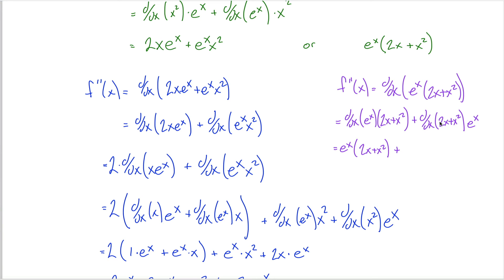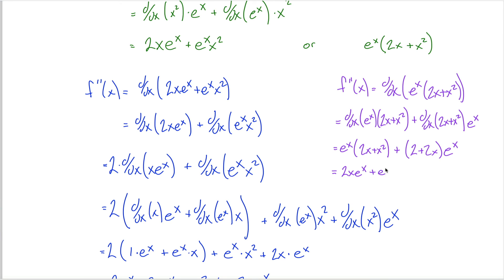I'm taking the derivative of something times something, so my product rule tells me that I take the derivative of the first thing, the e to the x, and then I multiply that by the second thing, the 2x plus x squared. But then I'm not done — I still have to add to that the derivative of the second thing, the 2x plus x squared, times the first thing, the e to the x. The good news is these are all derivatives I can take pretty easily. The derivative of e to the x is just e to the x, so I get e to the x times 2x plus x squared.